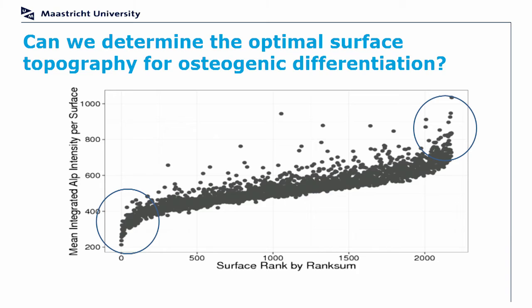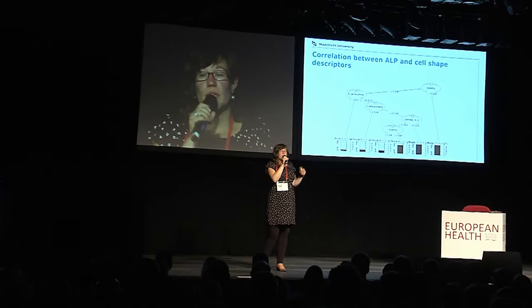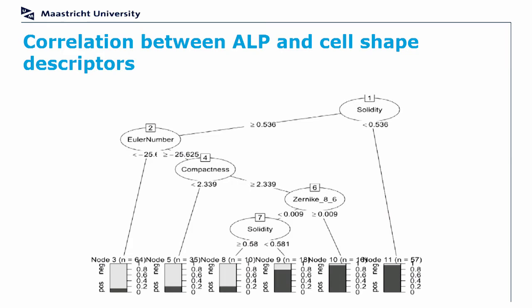We can identify these surfaces and, more importantly, we can actually relate the cell shape to this phenotypic outcome, and also the design of the surface topography to the phenotypic outcome. This makes it very interesting because it means we can actually design the behavior of the cell.